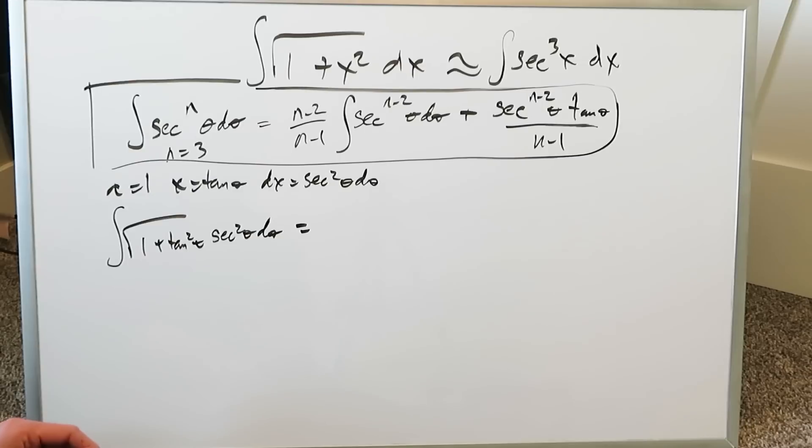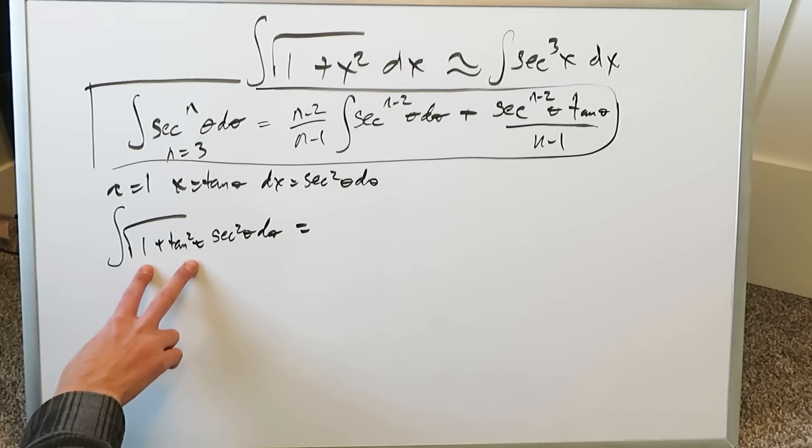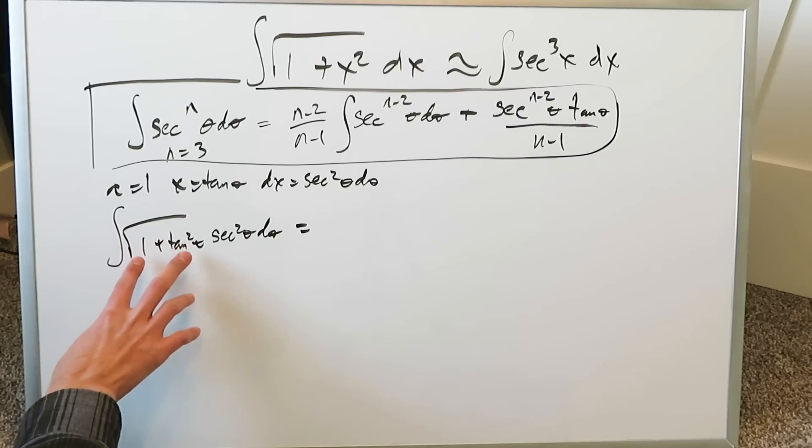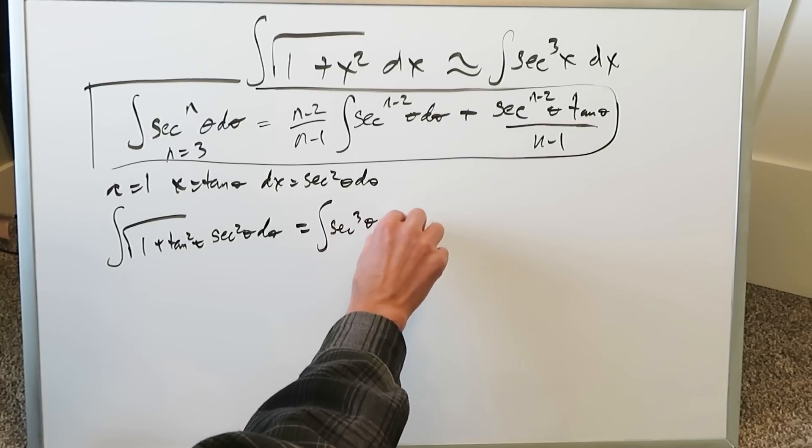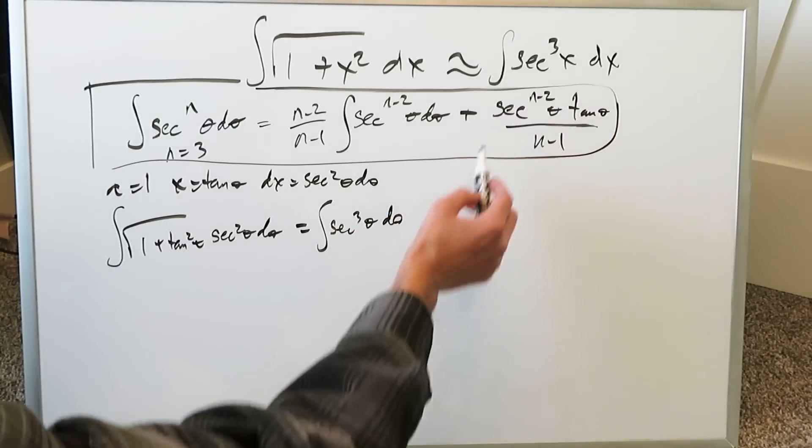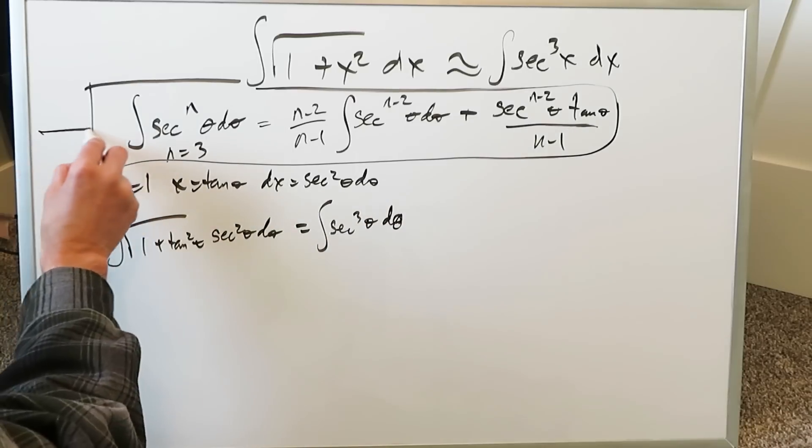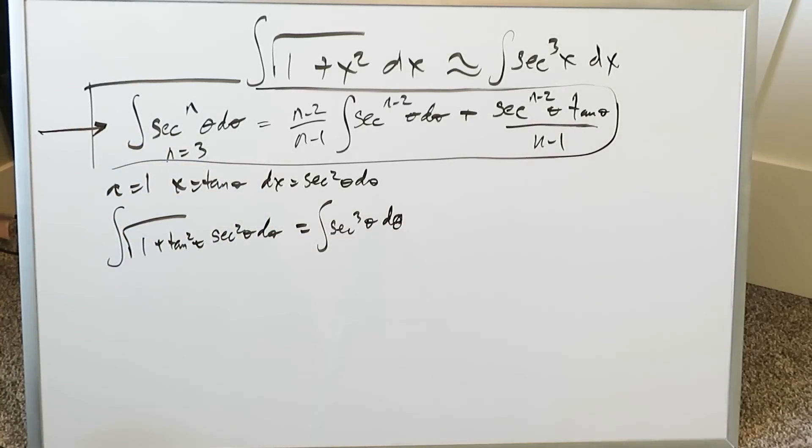You'll have here 1 plus tan square theta and then dx is secant square theta d theta. By means of a trigonometric identity which equals secant square theta, the root of that will be secant theta. That secant theta will combine with secant square theta and you'll end up at secant cube theta d theta, which is exactly what I have right over there, and for what we have this reduction formula in place.